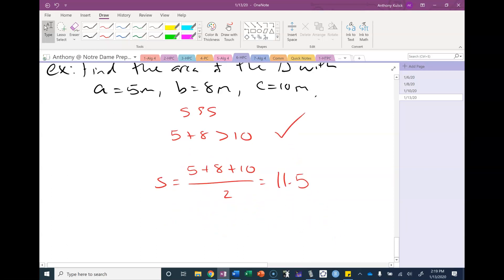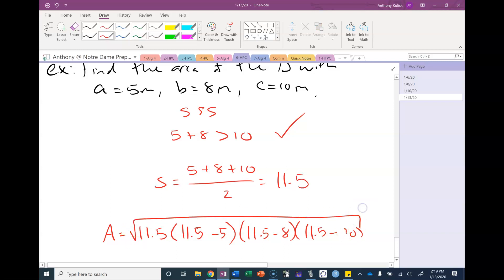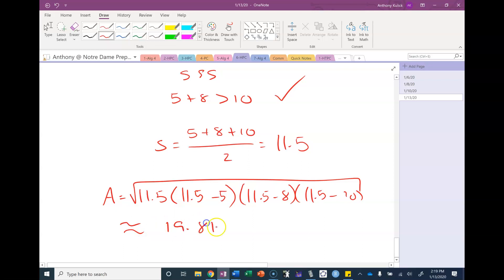The first thing I'll do is compute the semi-perimeter so 5 plus 8 plus 10 divided by 2 is 11.5. And then I'll just plug that into Heron's formula: 11.5 times 11.5 minus a times 11.5 minus b times 11.5 minus c and then all square rooted. When I type that into my calculator I get 19.81 meters squared. That's not so bad right. Pretty easy, all we really had to do is apply the correct formula.